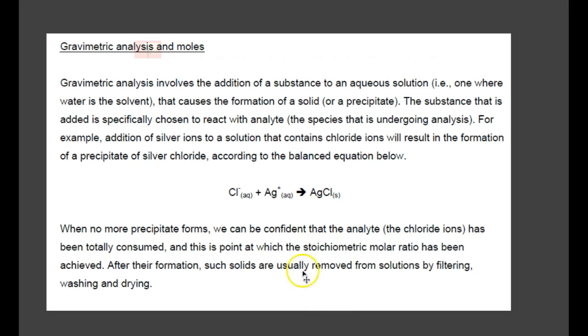Gravimetric analysis involves the addition of a substance to an aqueous solution, where water is the solvent, that causes the formation of a solid or precipitate. The substance that is added is specifically chosen to react with the analyte, the species undergoing analysis. For example, addition of silver ions to a solution that contains chloride ions will result in the formation of a precipitate of silver chloride, according to the balanced equation below. We have chloride ions and silver ions, and they make silver chloride as a precipitate.